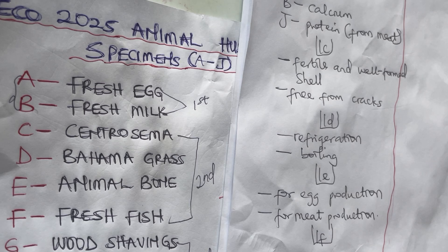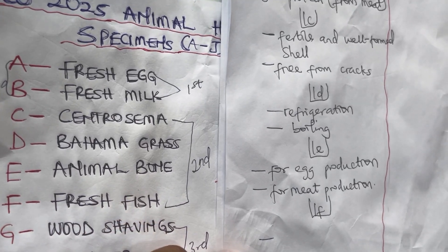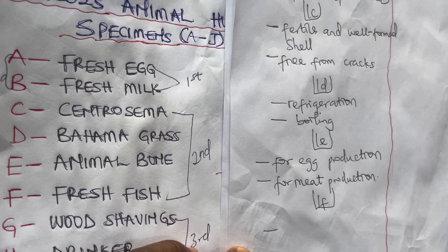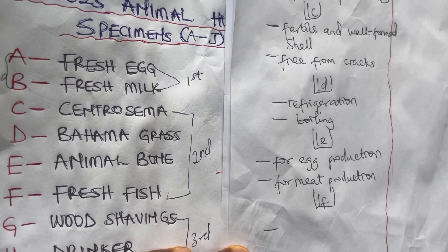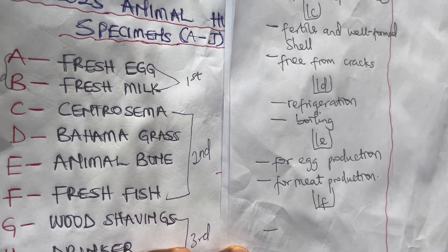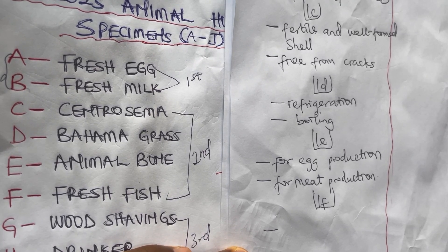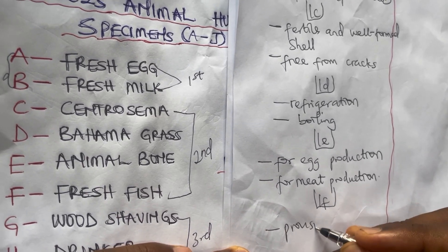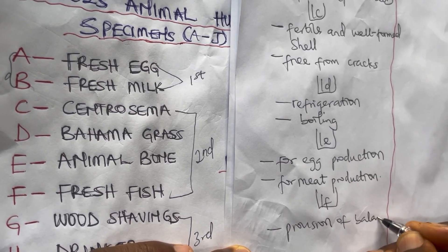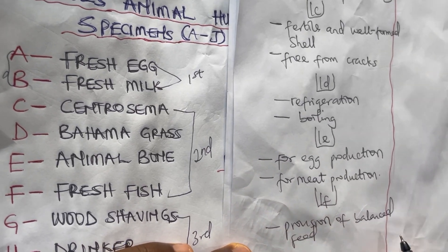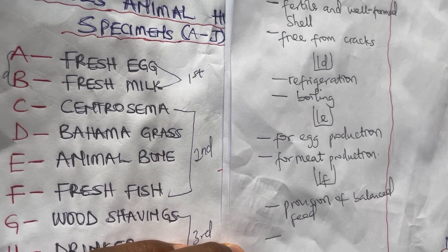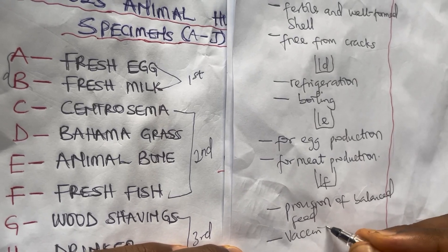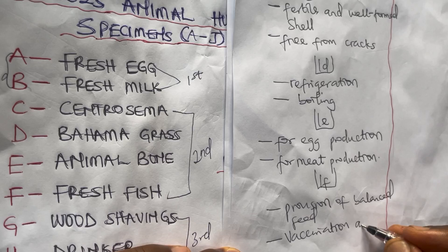Back to question one F — list two management practices to improve the productivity of live fowl (specimen J). One: provision of balanced feed, as providing balanced feed will improve productivity. Two: vaccination and disease control — vaccinating the animals helps to control disease and improve productivity.